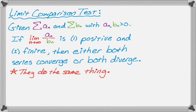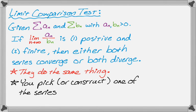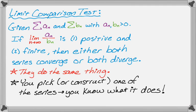A lot of people find this confusing at first, but you're actually going to pick or construct one of the series, and since you're picking or constructing it, you know what it does. So you know what one of them does, you take the limit, you get your value, and then you draw your conclusion. You just have to get used to picking or constructing the series.